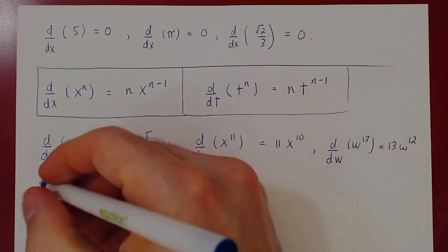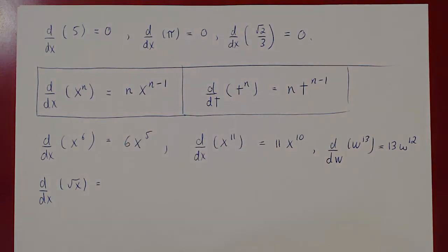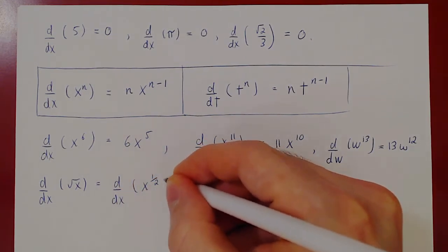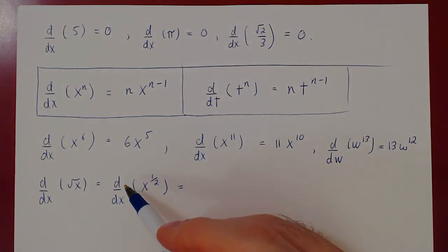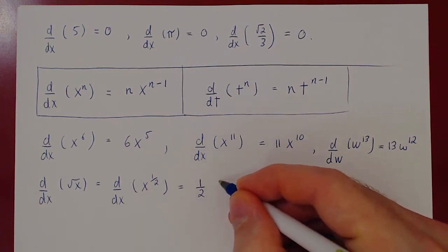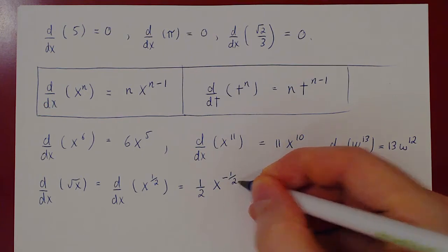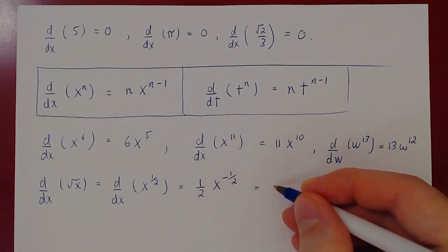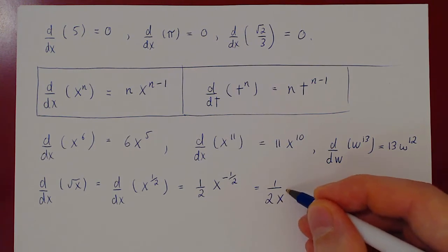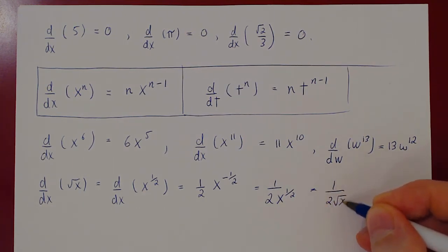What about the derivative of the square root of x? All we have to do is rewrite root of x as an exponent: root of x is x to the 1/2. Now apply the power rule — bring the power down: 1/2 times x to the 1/2 minus 1, which is negative 1/2. You can rewrite this as 1 over 2, and sending x to the negative 1/2 to the denominator gives positive 1/2, so the result is 1 over 2 root of x.